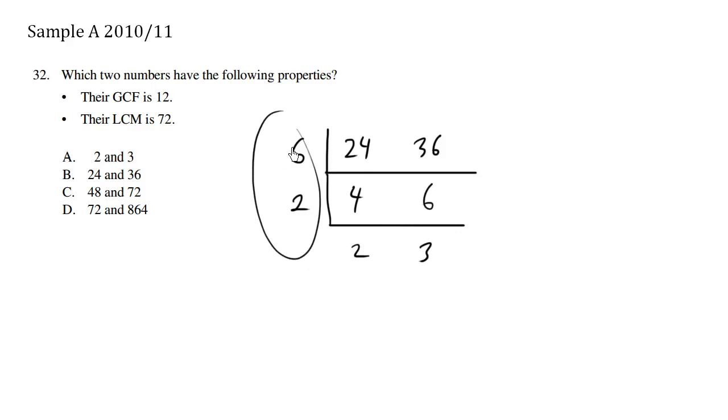So this times this, all these numbers going down this way multiplied is our GCF. So 6 times 2 is the GCF. So the GCF is 12.